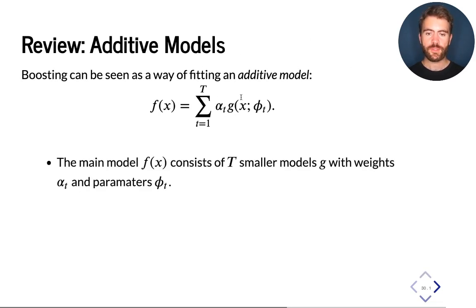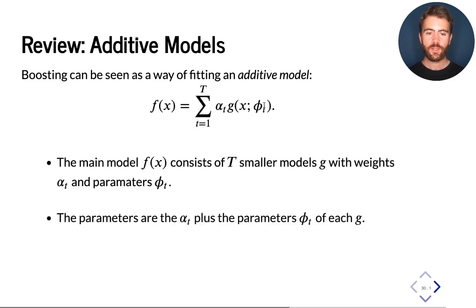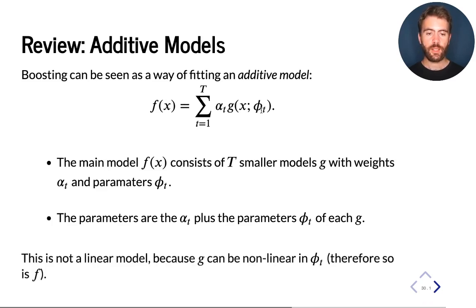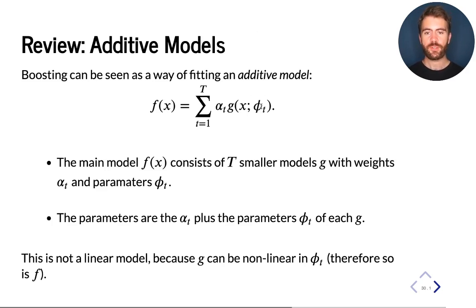Recall that boosting is a way of combining multiple smaller weak learners — multiple small models — into a bigger model by training them in a way that corrects the errors of the submodels. These are weak models, but we fit them on the points where the previous models have made errors, so the resulting ensemble will be accurate given enough predictors.